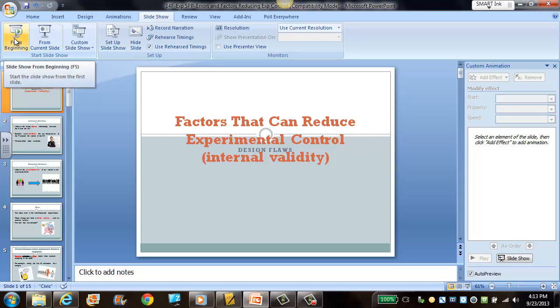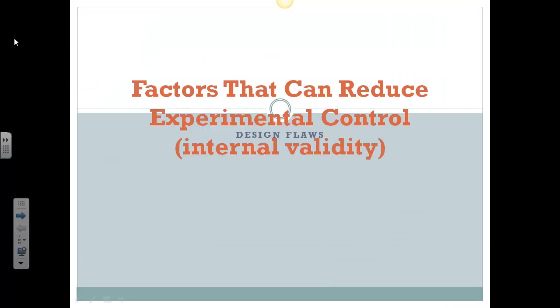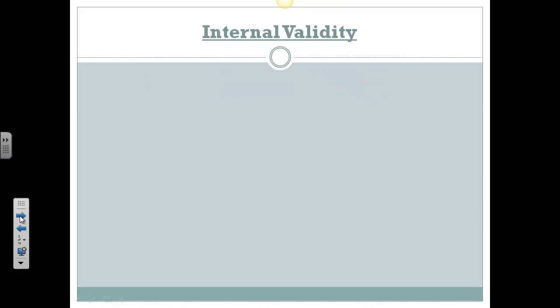Hey AP Psych-ers, this is Mr. Ray, and we are going to begin our last video in this series on research methods. So congratulations, you almost made it through. We are going to talk today about factors that can reduce our control in experimental designs and therefore reduce our internal validity, and then we'll talk about some procedures we can do to reduce the likelihood that those flaws will affect our results. So hopefully you'll have your notes out, following along and taking good Cornell notes, remembering to include some personal reflection in those Cornell notes. Let's get started.